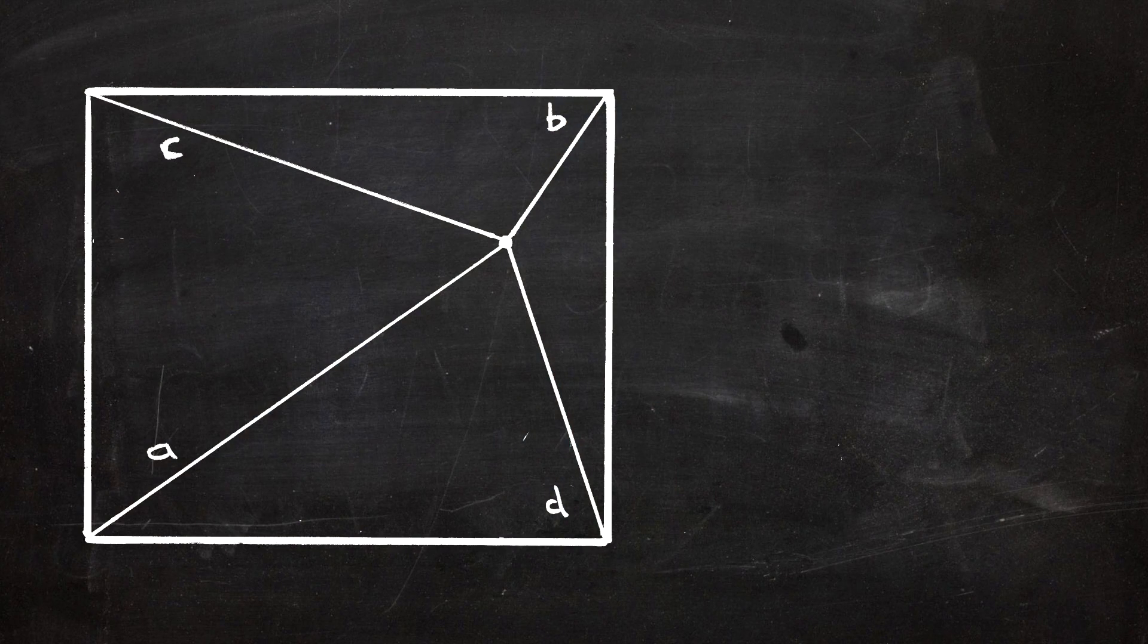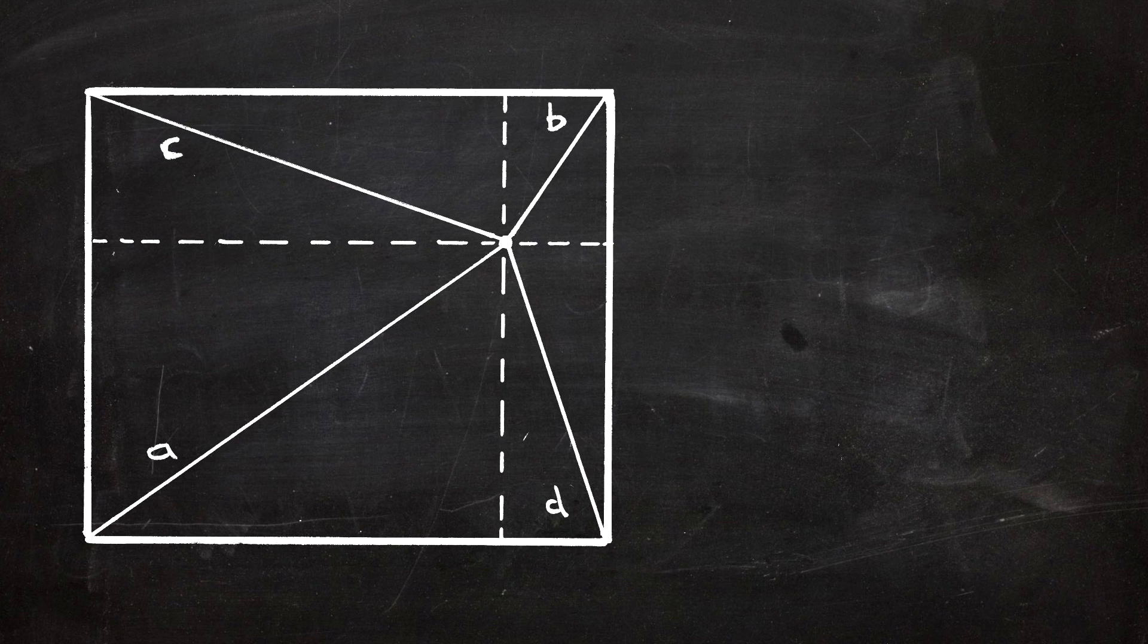So here is that rectangle again. Now I'm going to draw a horizontal line and a vertical line through that point. So you can see the proof looks like a British flag.